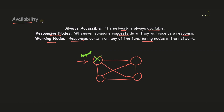Availability ensures that the request must be forwarded to all the other nodes, and whichever node is functioning should return the response to that particular request. That is the principle of availability.